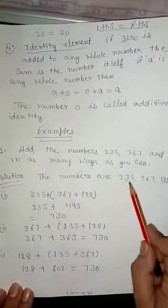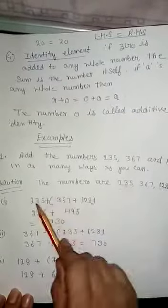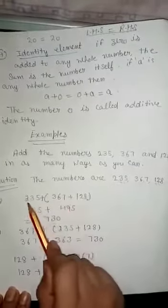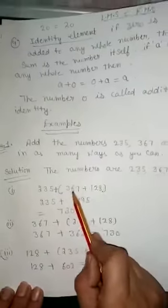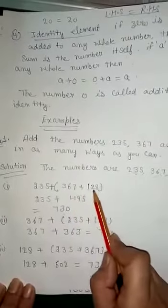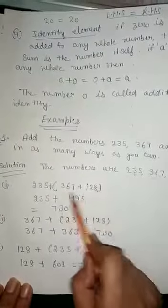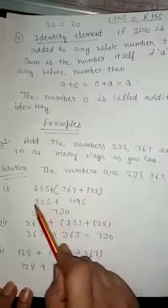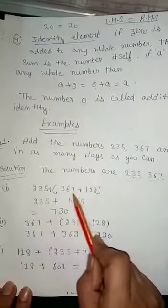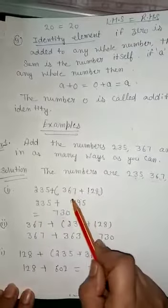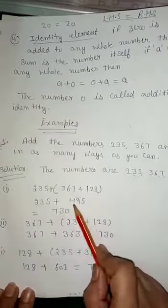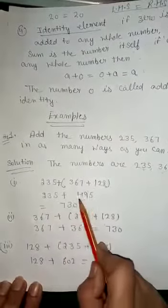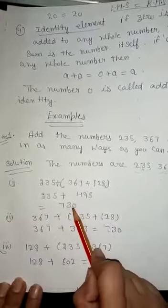The first way: put the first number outside and the second and third numbers in the bracket. That is, 235 + (367 + 128). We solve the bracket first: 367 + 128 = 495. Then 235 + 495 = 730.